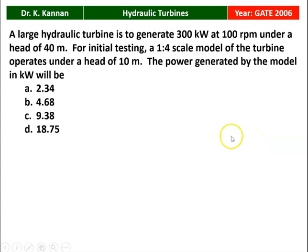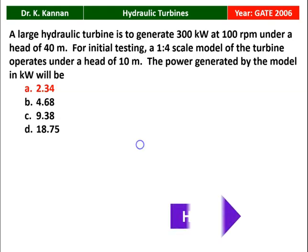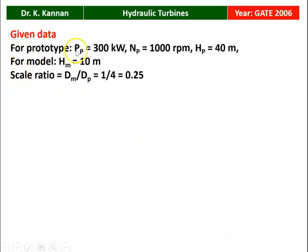The next question is from the 2006 question paper. A large hydraulic turbine is used to generate 300 kilowatt at 1000 RPM under a head of 40 meters. For initial testing, a 1:4 scale model of the turbine operates under a head of 10 meters. The power generated by the model in kilowatt — the correct option is 2.34 kilowatt. For the prototype: power = 300 kW, head = 40 m; for the model: head = 10 m, scale ratio D_M/D_P = 1/4 = 0.25.